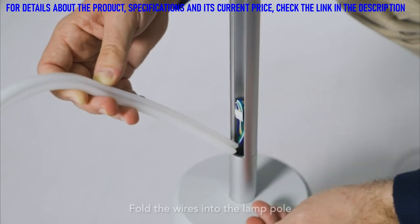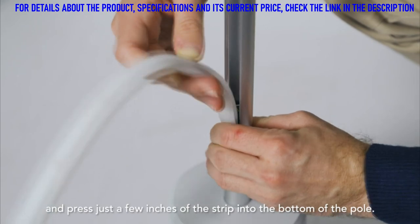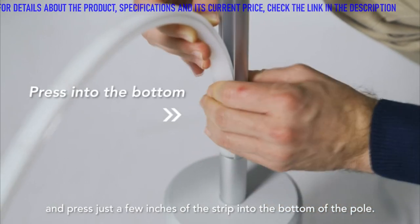Fold the wires into the lamp pole and press in just a few inches of the strip light into the bottom of the pole.